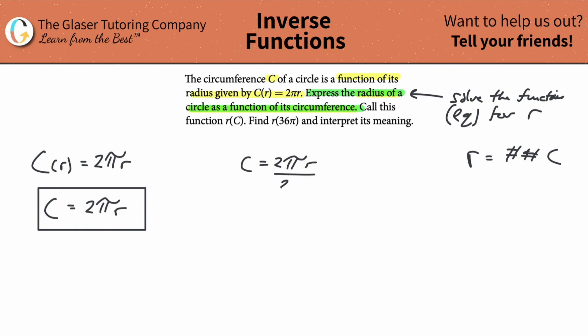from both sides. That cancels on the right, and that's going to be C over 2π. Now notice what I have, I'm just going to write it nice now. r is equal to C over 2π.